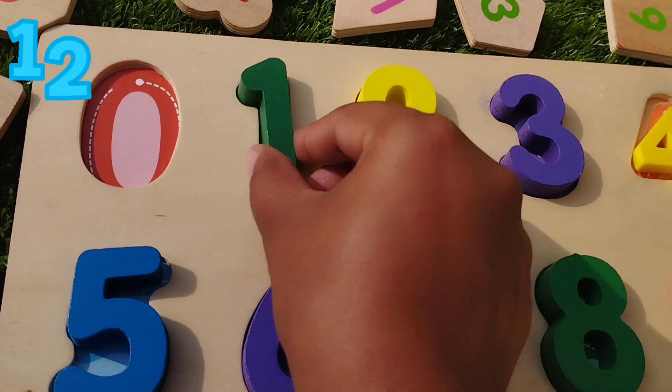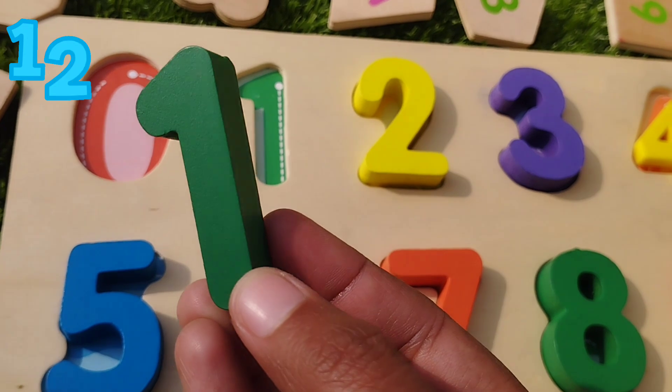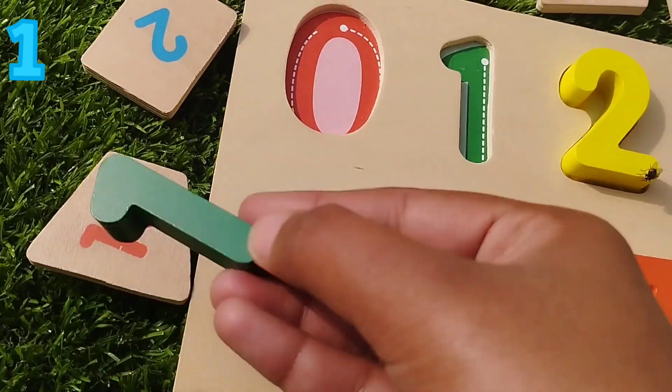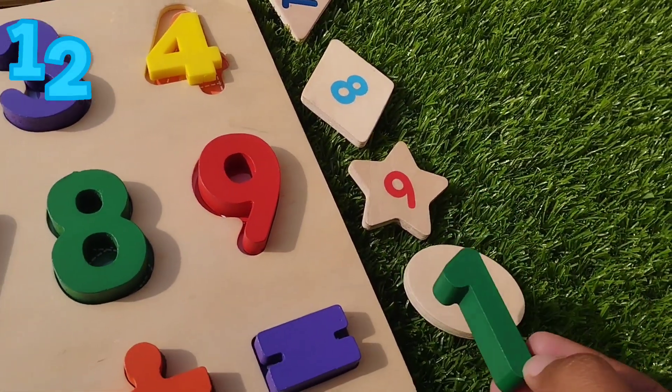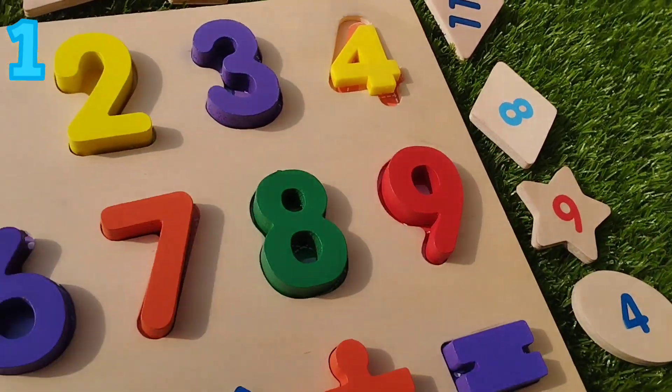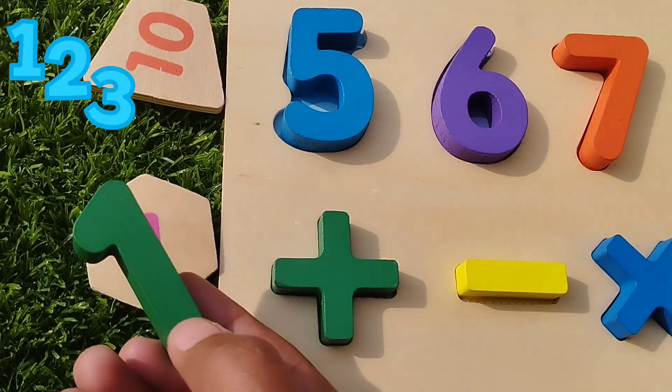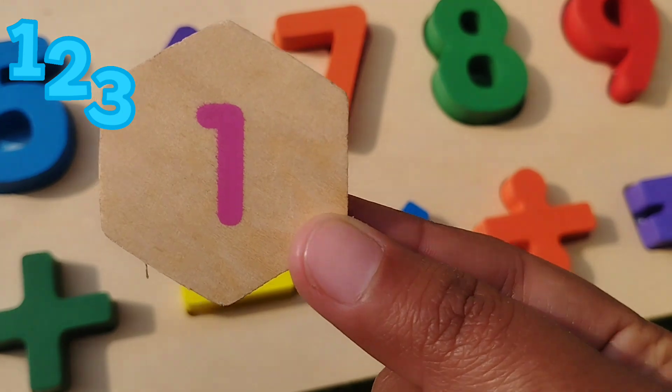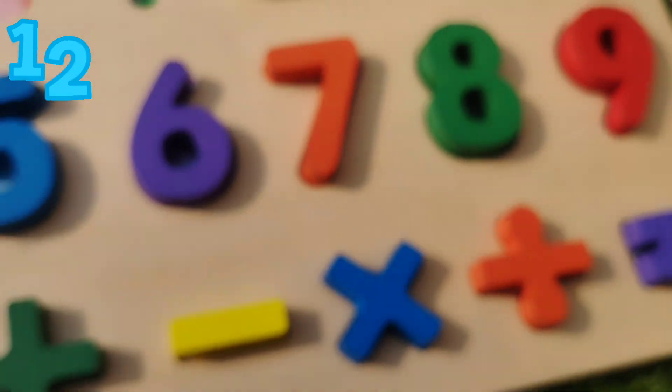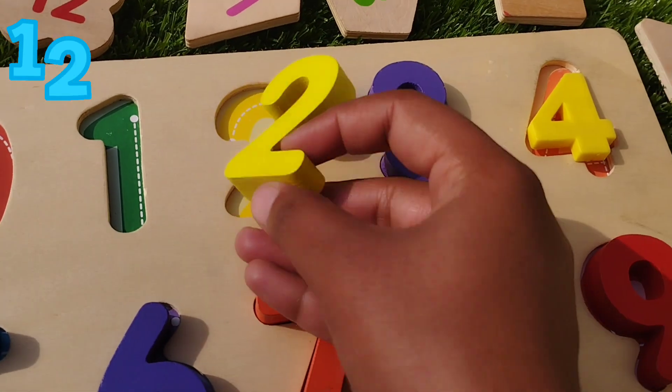The next number is number 1. This is number 1. The shape is a hexagon. This is hexagon and the number is 1.